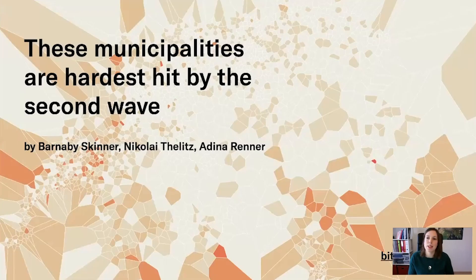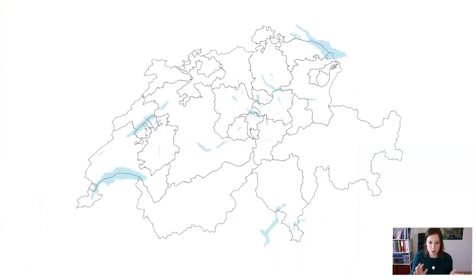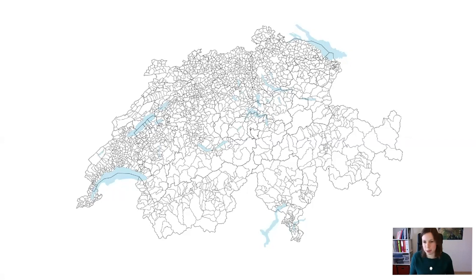The first story is about showing which municipalities in Switzerland have been hit hardest by the coronavirus. For this story, we collaborated with the Swiss government to gain exclusive access to localized data. In Switzerland, the government publishes coronavirus data at a cantonal level, but not on a municipal level. This lack of detailed data is quite cumbersome when dealing with a virus that causes very localized outbreaks. These municipalities are quite small — in fact, the smallest has only 11 residents.